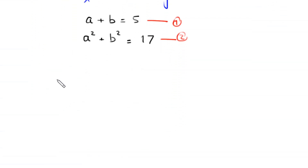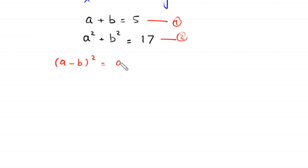Now by using the algebraic identity: a minus b whole squared is equal to a squared plus b squared minus 2ab.